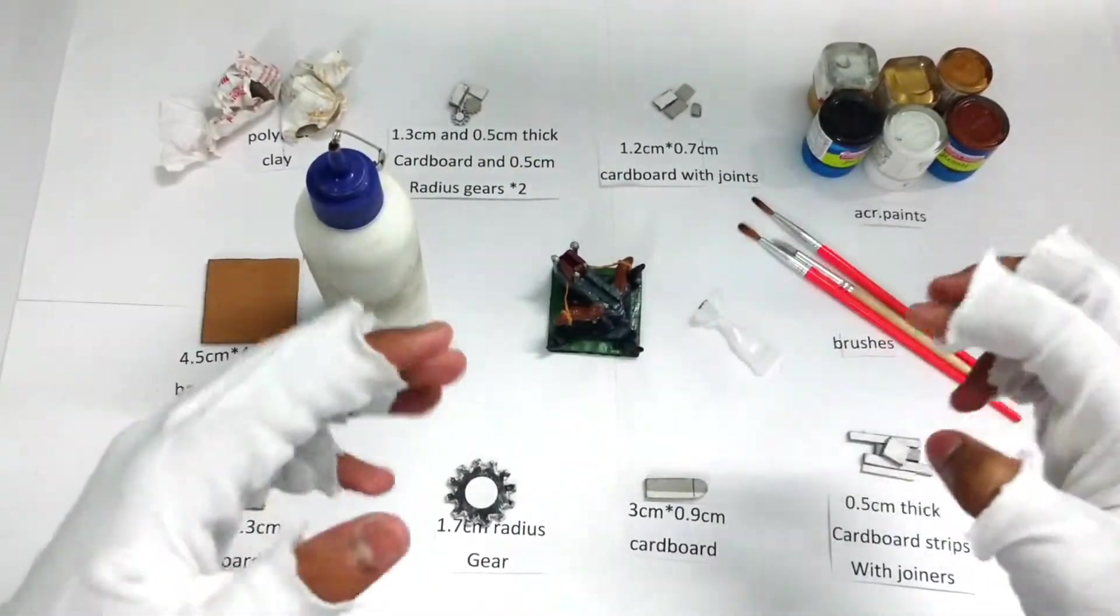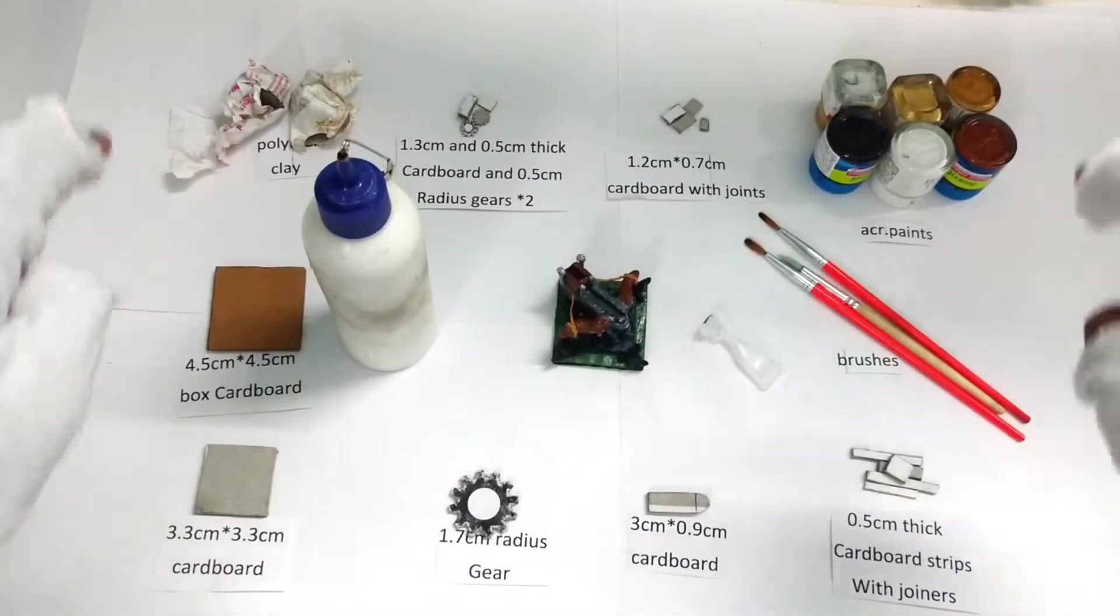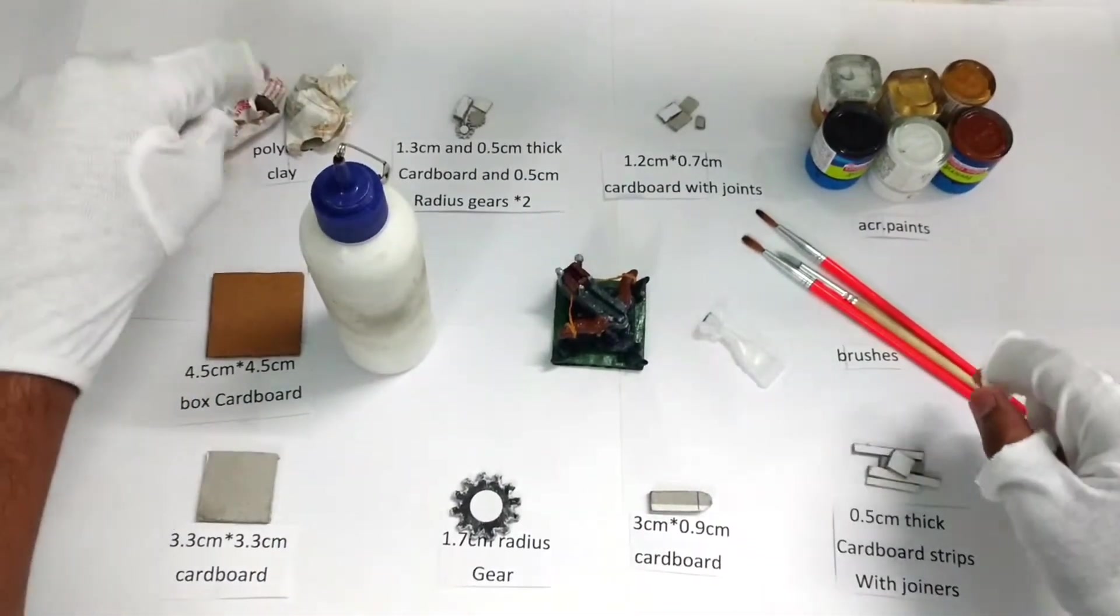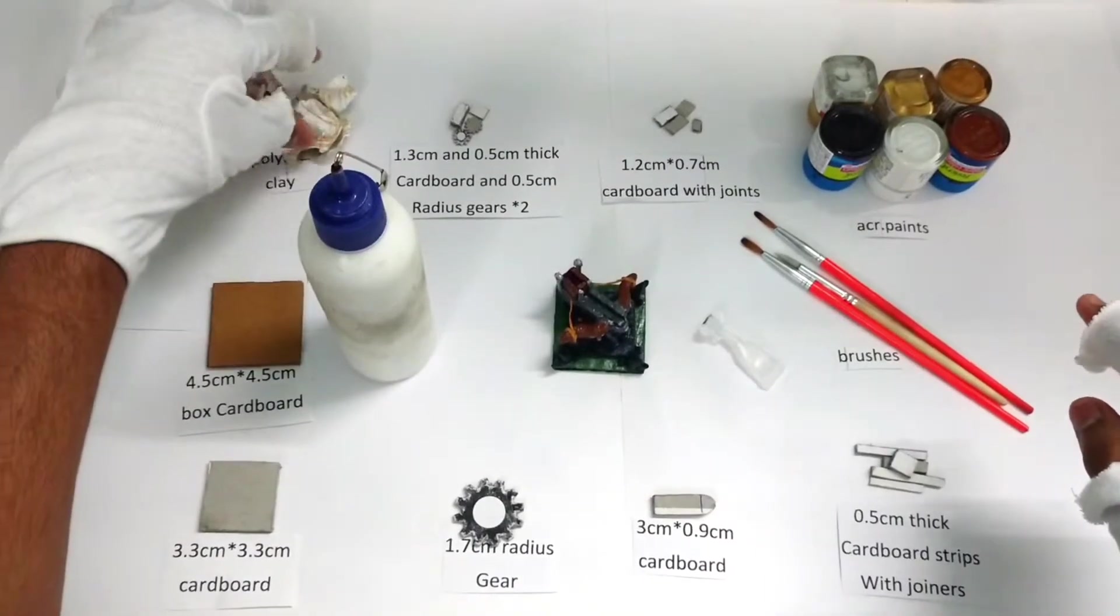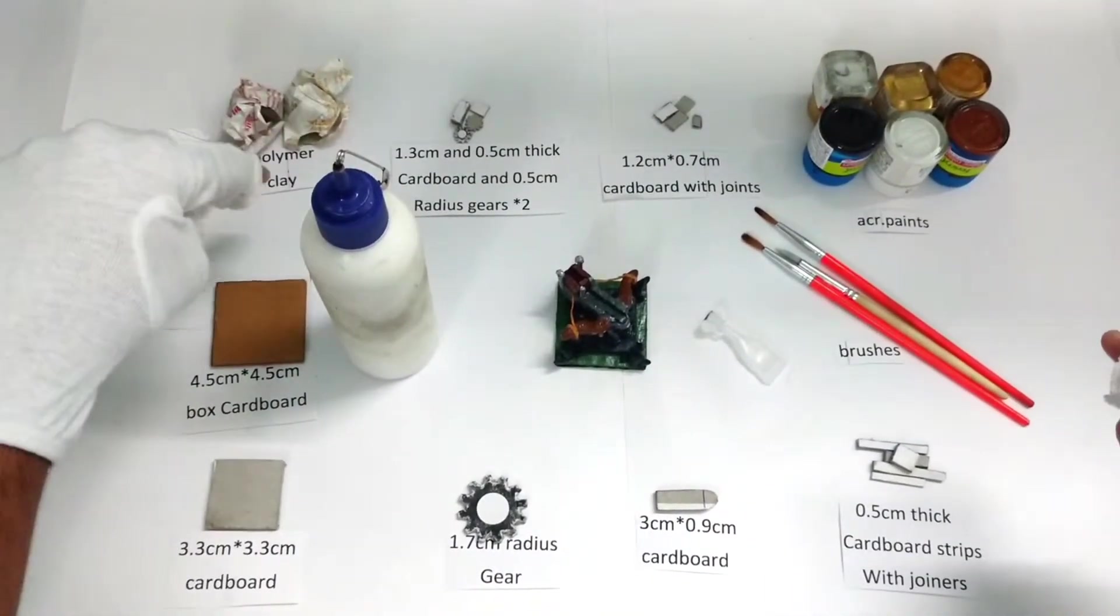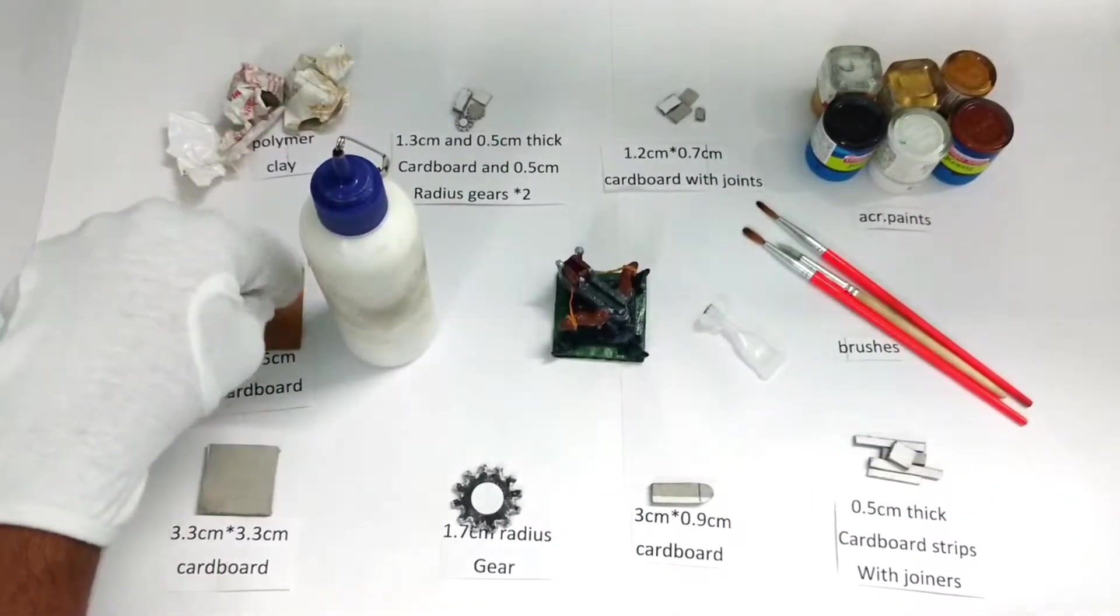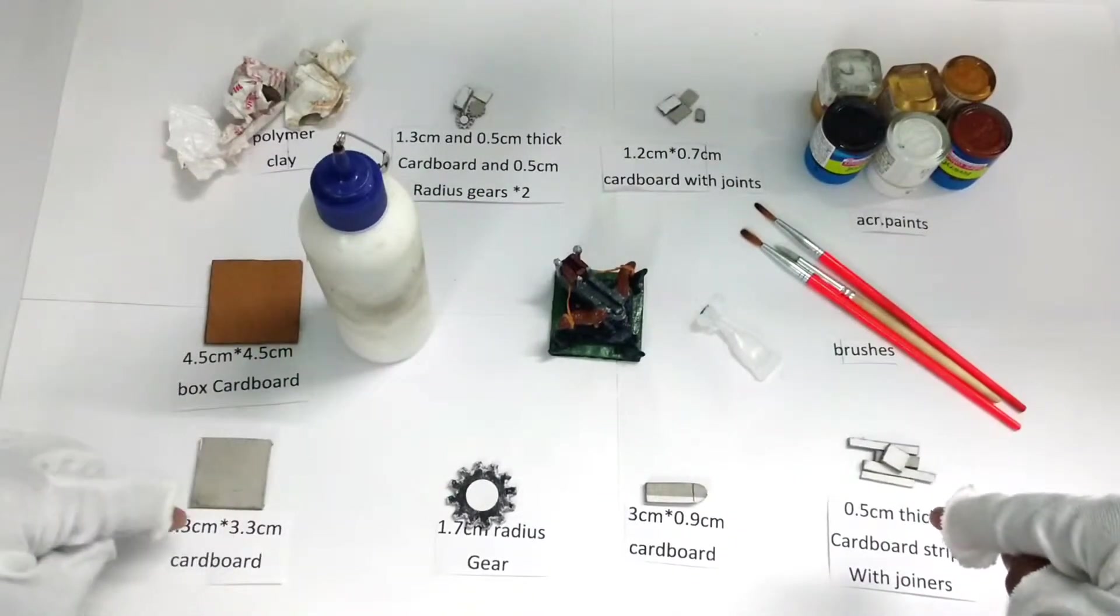Now these are the materials you'll need, it's all on the screen. First, obviously you need polymer clay. Next you need this 4.5cm x 4.5cm box cardboard base. I'm not going to read out the dimensions on screen.